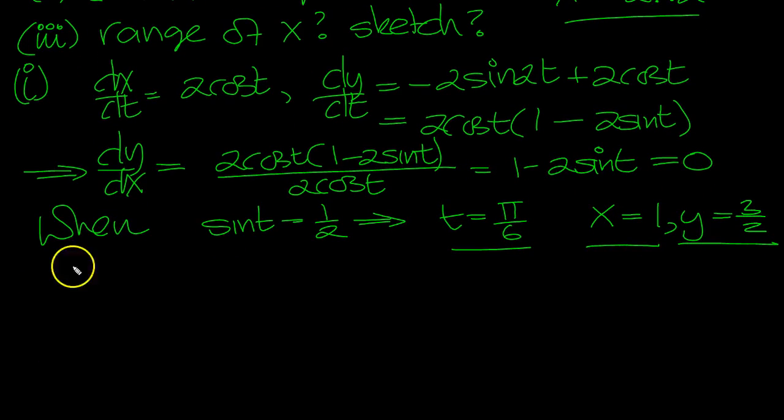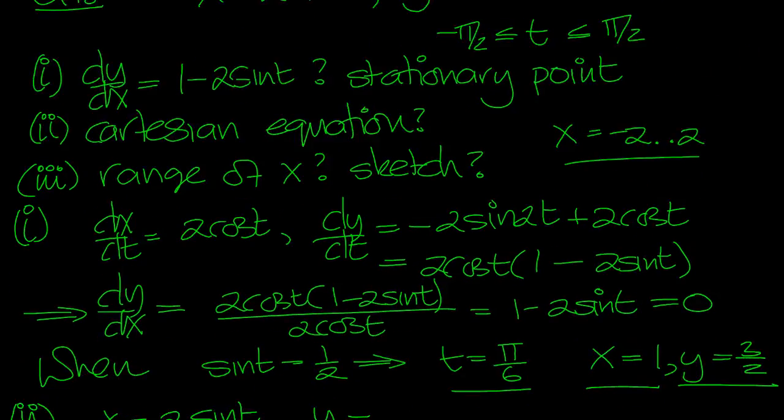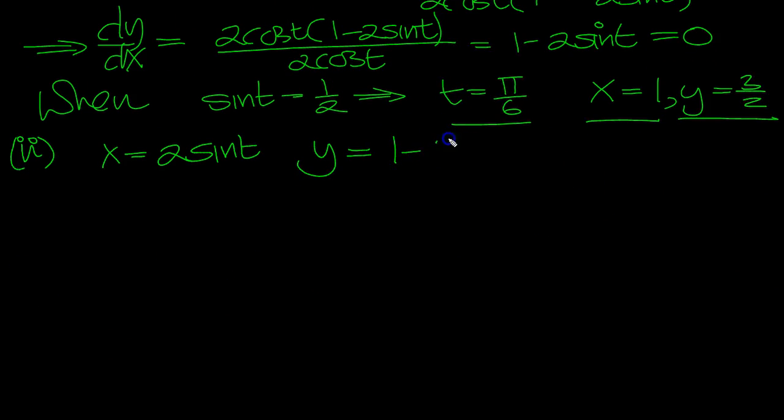Cartesian equation part 2. So, okay, x is equal to 2 sine t, and y is equal to cos 2t, which is 1 minus 2 sine squared t, using the double angle formula.